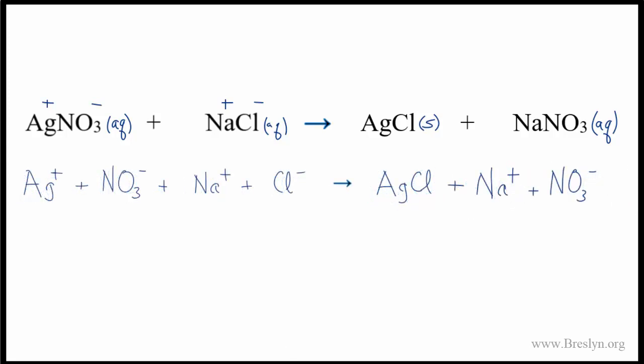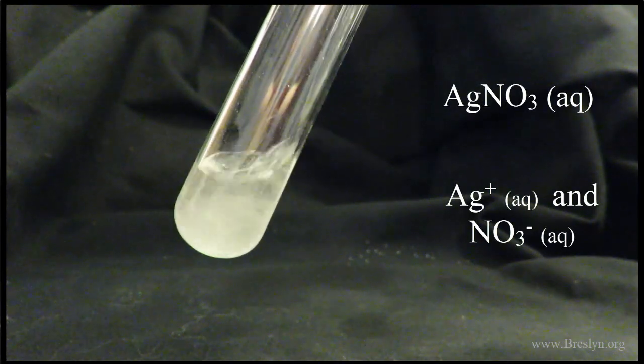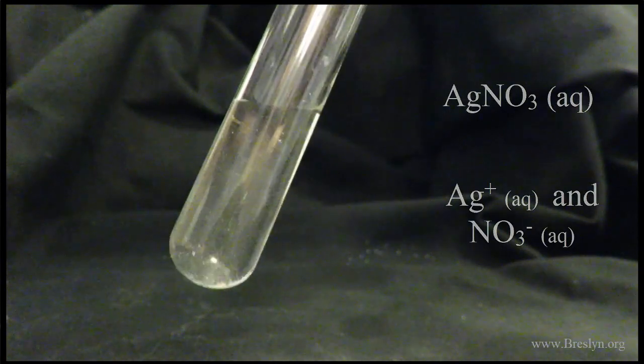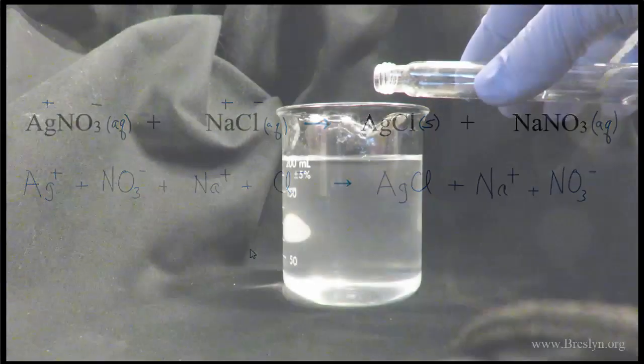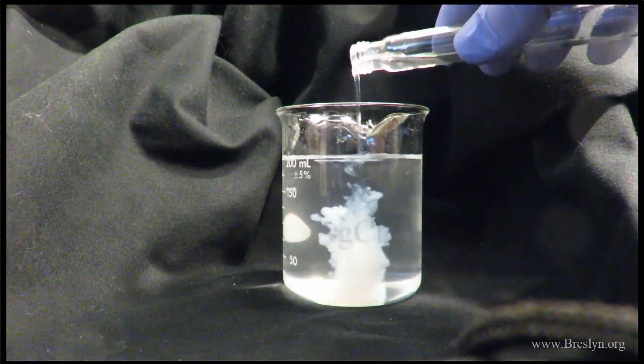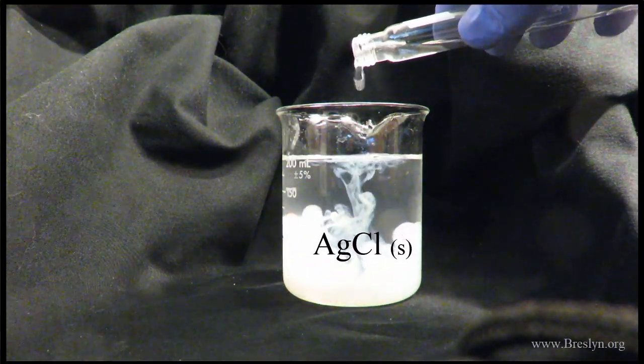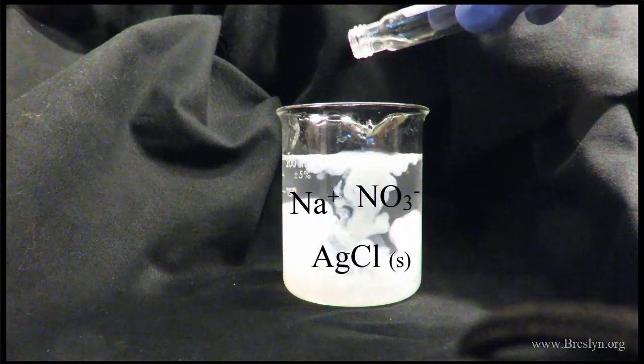Think back to where we started: we had our test tube with AgNO3 dissolved as ions in aqueous solution, and NaCl which was also aqueous. When we mixed them together, we saw that white precipitate which was the solid AgCl, and then the NaNO3 stayed in solution.